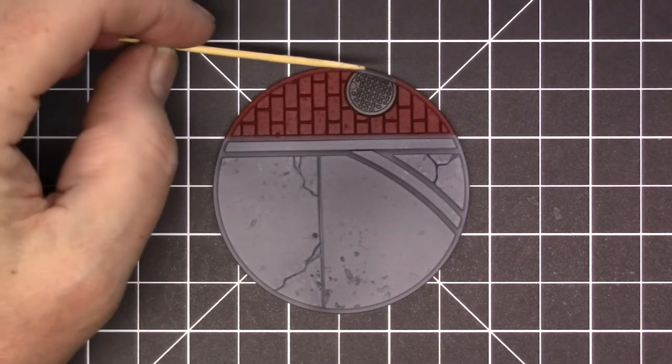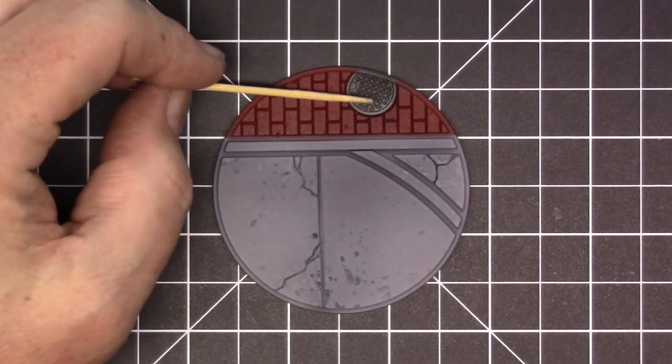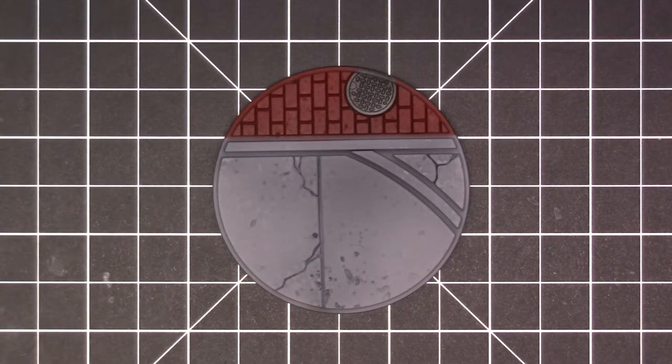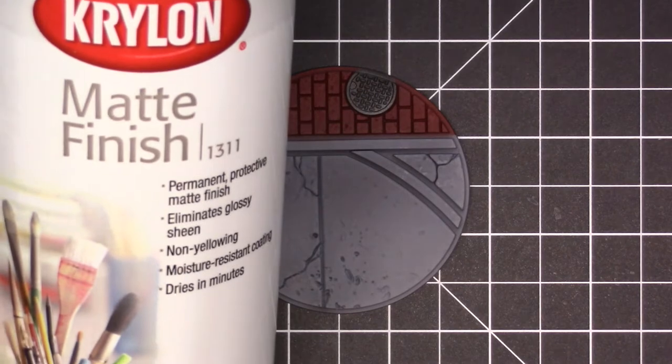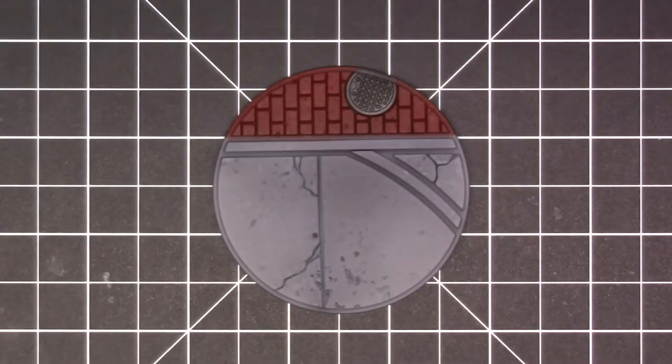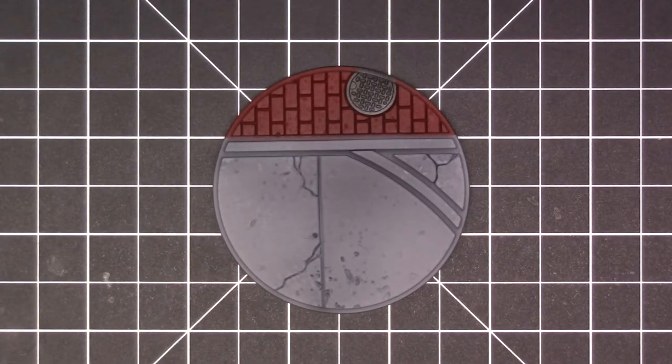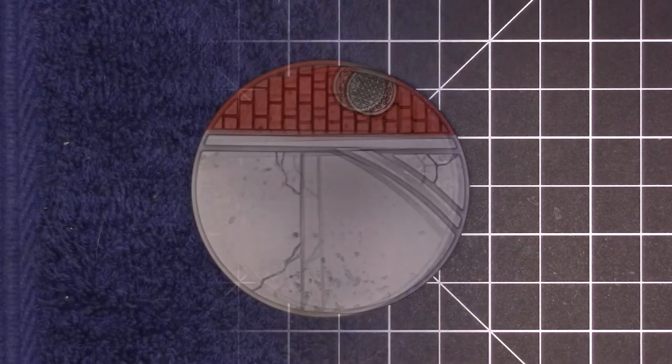I went back and sprayed a real light coat of that Stynylrez black primer on manhole cover because I'm going to do some dry brush on it. But I did go ahead and seal with the Krylon matte finish. So now I need to set up and start doing some dry brush and some washes.